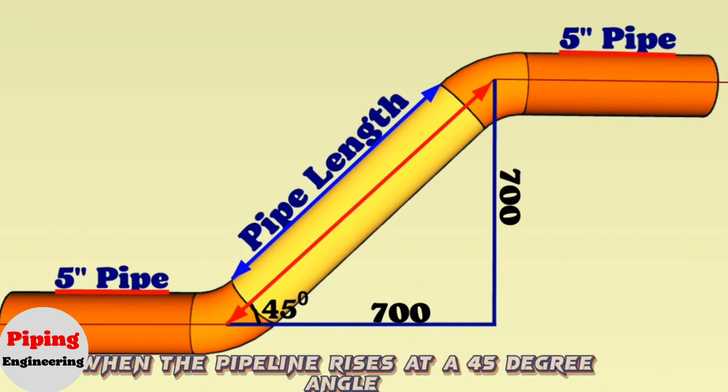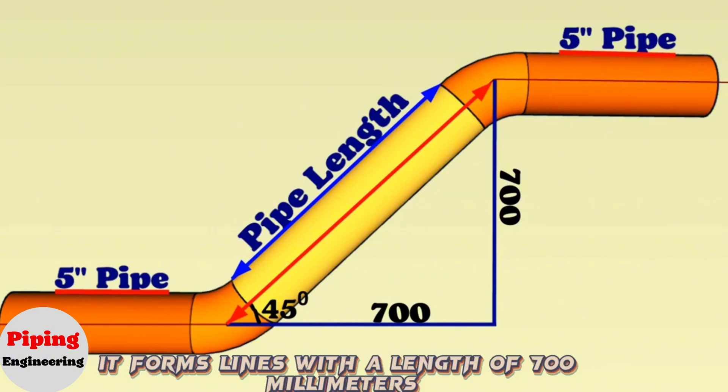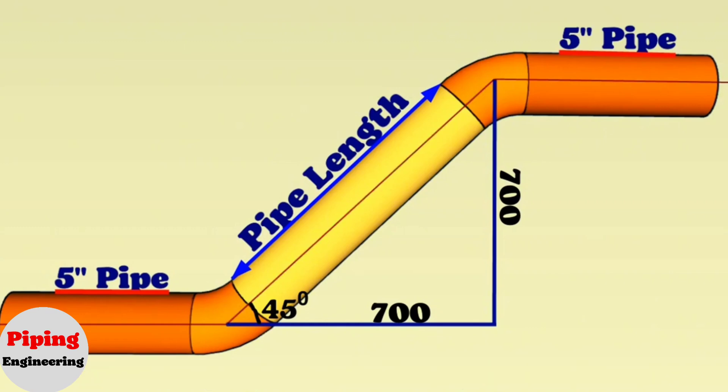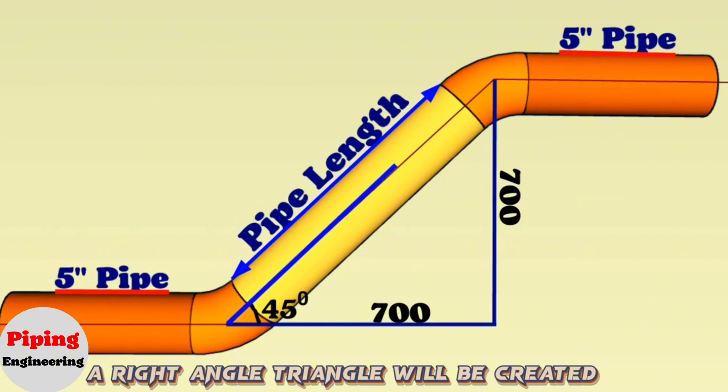When the pipeline rises at a 45-degree angle, it forms lines with a length of 700 millimeters passing through the centers of the elbows. If we combine these lines, a right-angle triangle will be created.